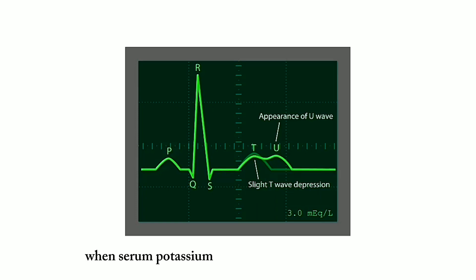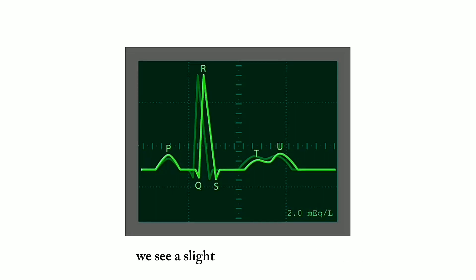When serum potassium is lower to 2 milliequivalents, we see a slight increase in the P wave and an increase in the PR interval, the further depression of the T wave and a further increase in the U wave.